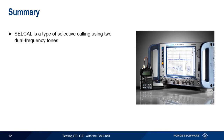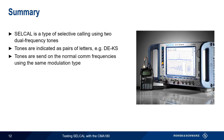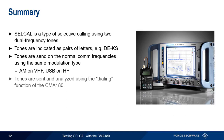So in summary, cell call is the type of selective calling used in aviation, and cell call alerts aircraft using a pair of dual frequency tones. These tones are indicated as pairs of letters, with each letter corresponding to an audible tone. Tones are transmitted using the same frequency and modulation type as the communications channel, with AM being used on VHF and upper sideband used on HF. On the CMA 180, tones are sent and analyzed using the dialing functions. Tones are set using dial on the generator side, and are analyzed using dialing on the analyzer side.